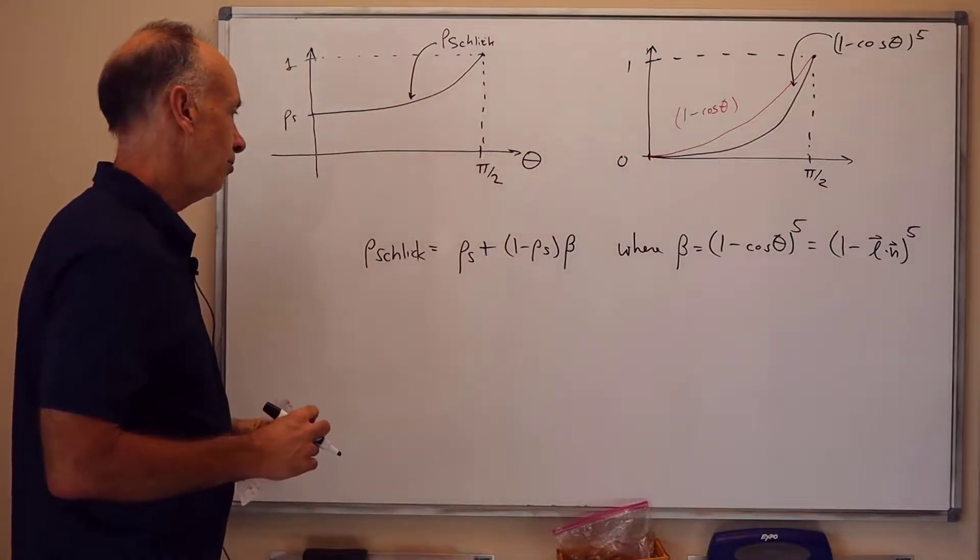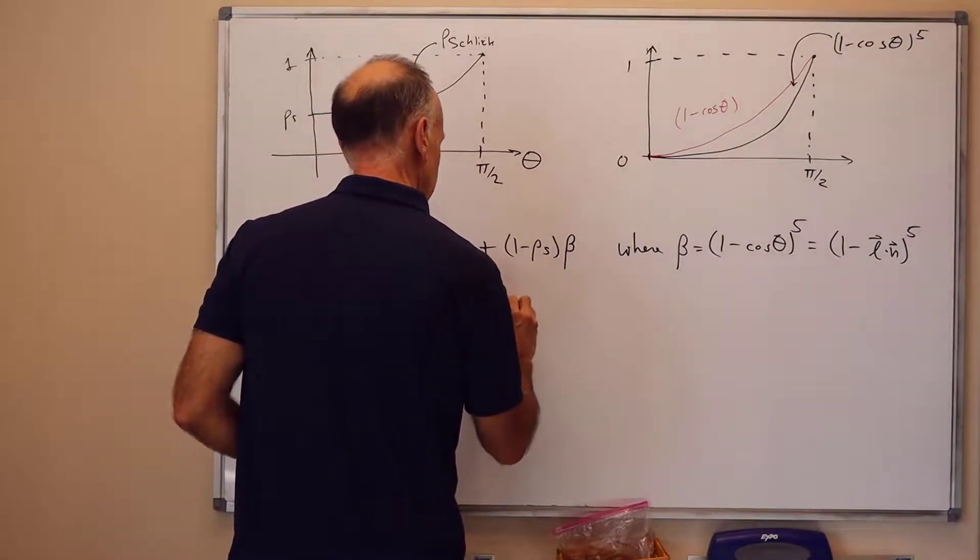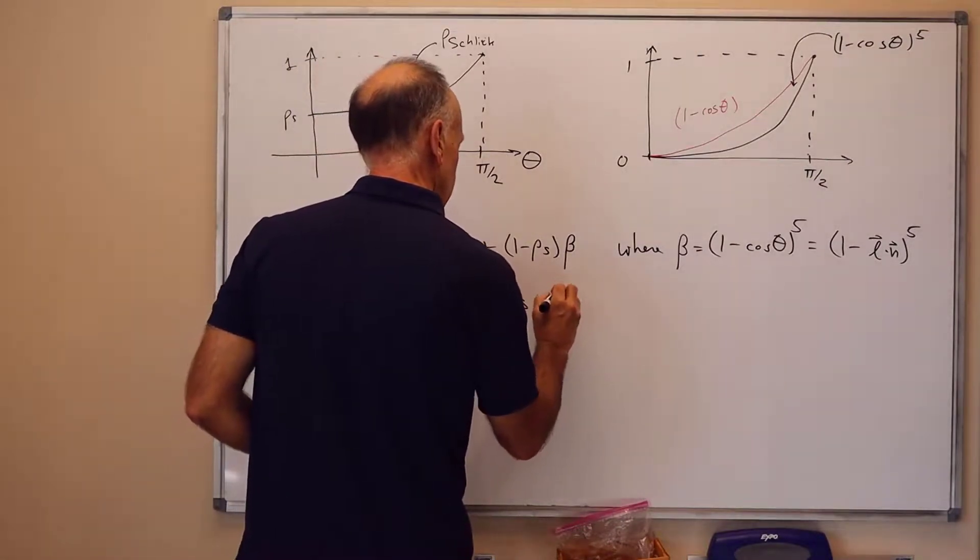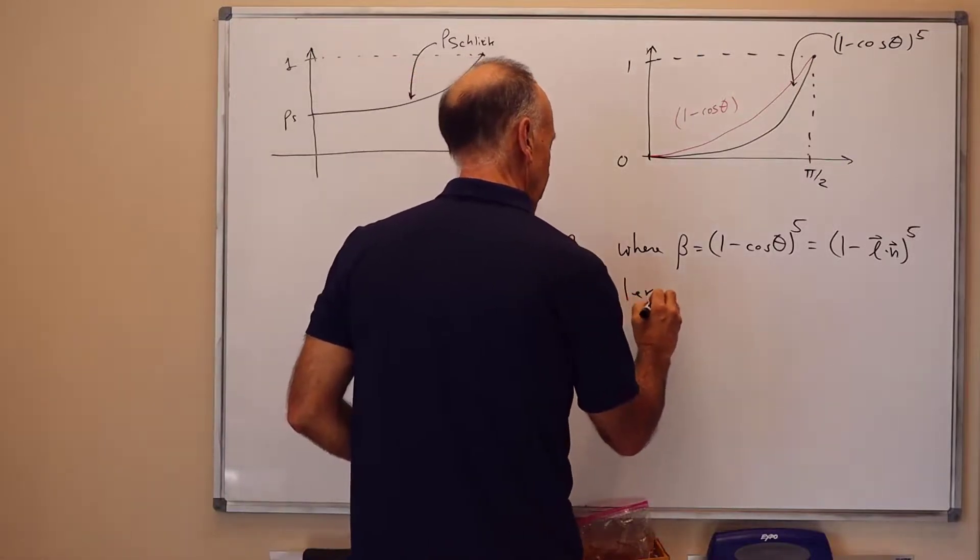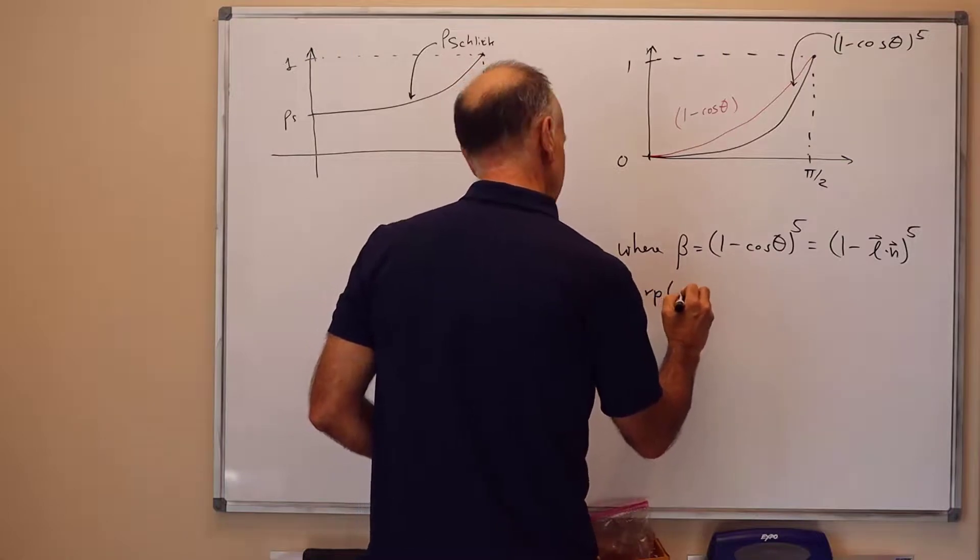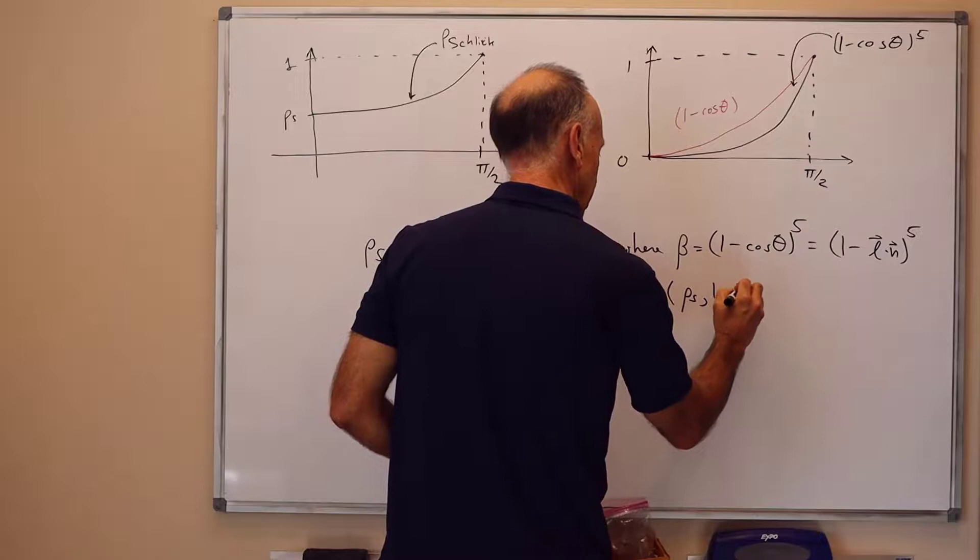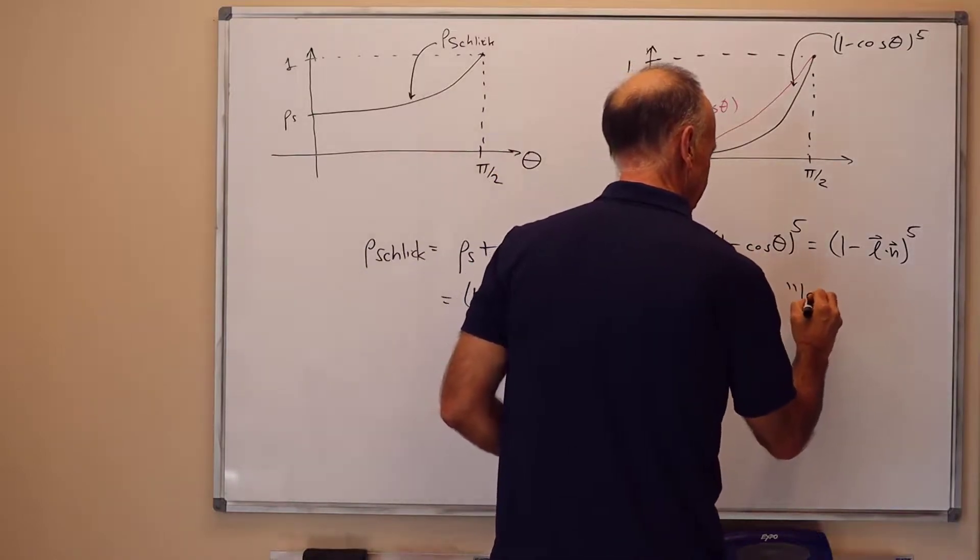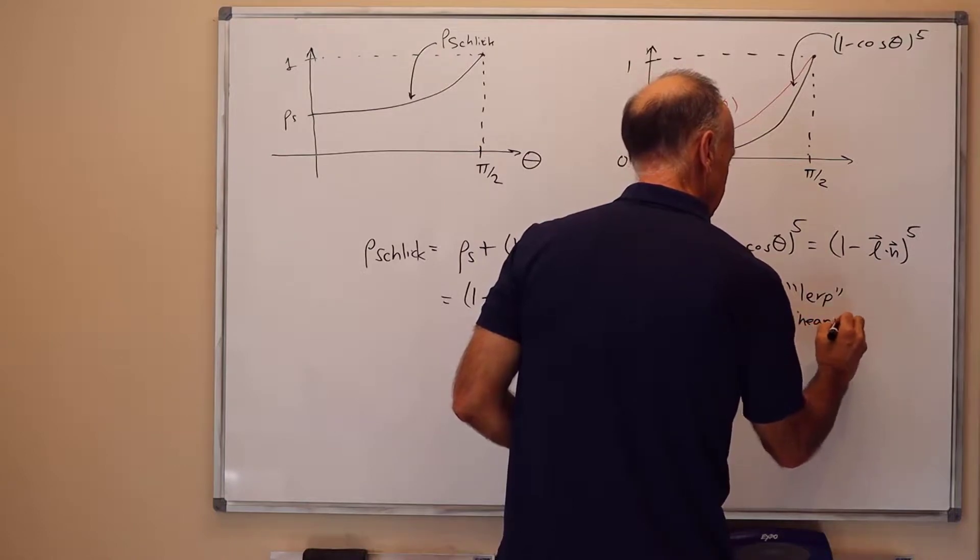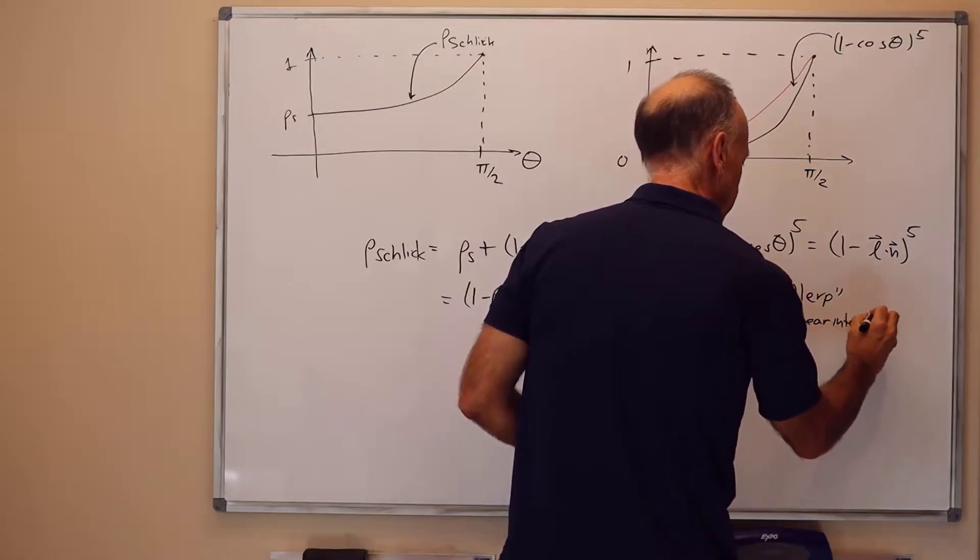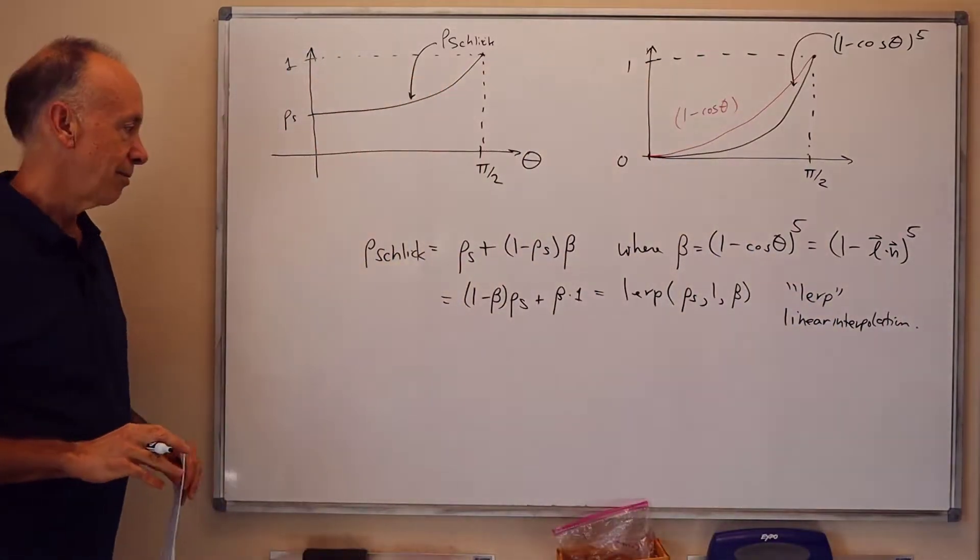And that gives us the formula for Rho-Schlick. We can also write this as 1 minus beta times rho s plus beta times 1. Which, in the next chapter in the book, we'll use linear interpolation and rewrite that as LERP, rho s, 1, beta. Where LERP will stand for linear interpolation controlled by beta. So, but we'll see that topic in the next chapter in the book.